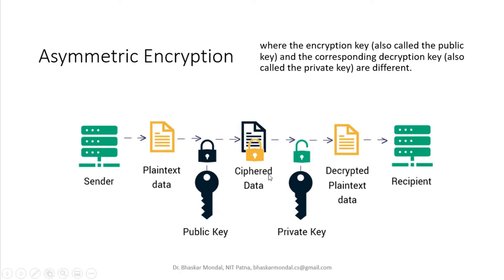If you look at this diagram, you can understand the sender encrypting the plaintext using a public key, and the output is the cipher data which is transmitted to the recipient. The recipient decrypts it using the private key and gets the decrypted plaintext, which the recipient can then read.